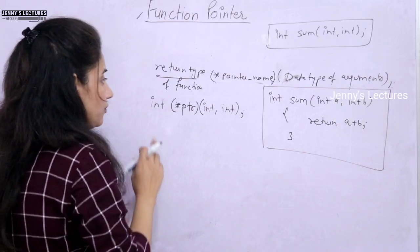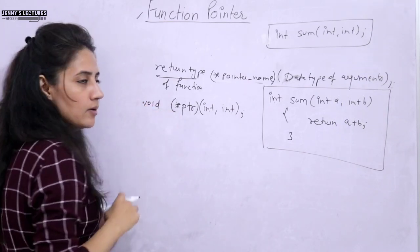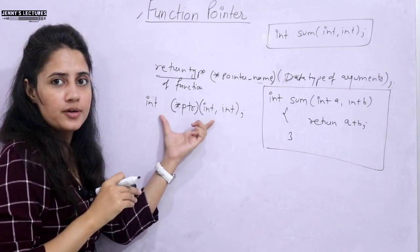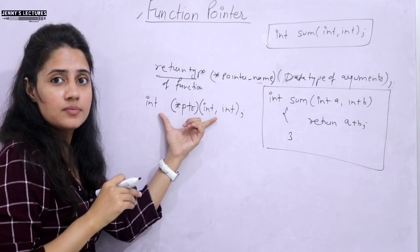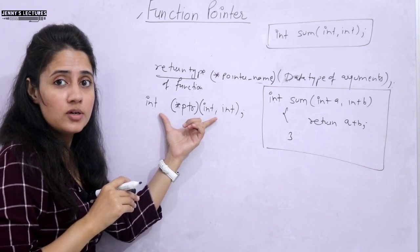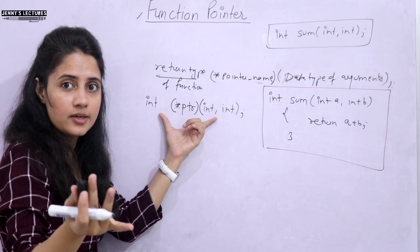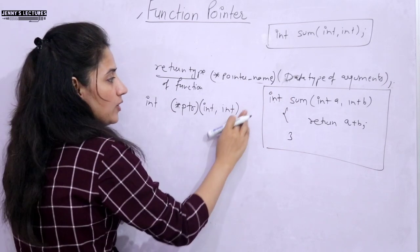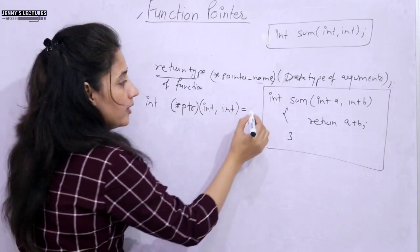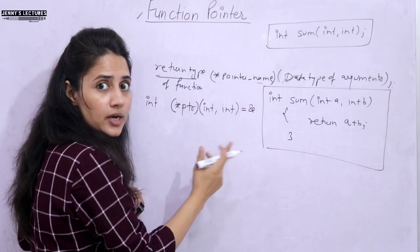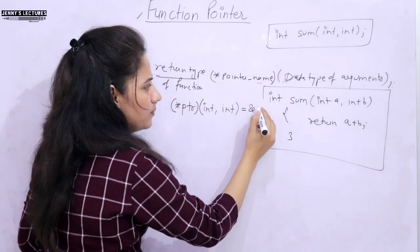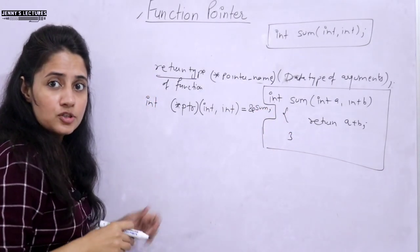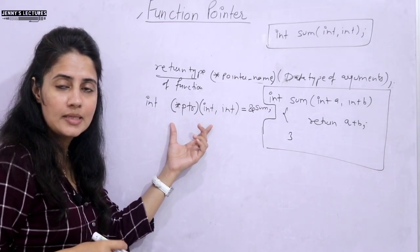Now let's initialize this pointer. A pointer is a special variable which contains address of another thing. This is a function pointer, so it will contain the address of this function. How do you initialize it? Equal to the address of the name of the function. The name of the function is sum, so simply write: ptr = sum. This is the initialization of this function pointer.